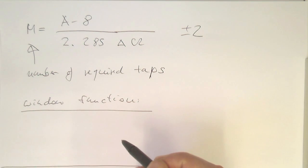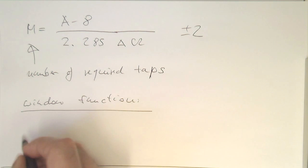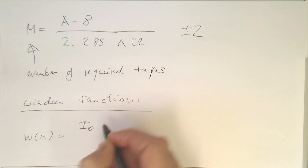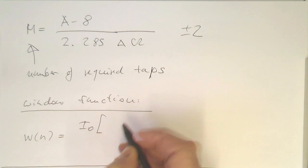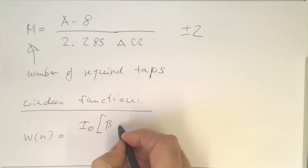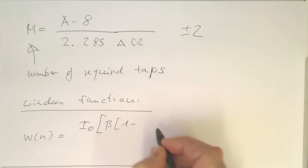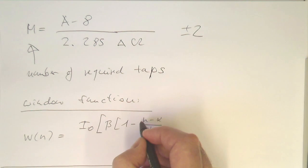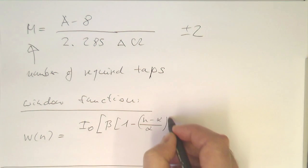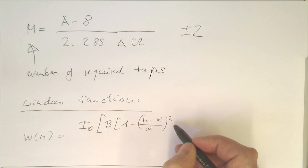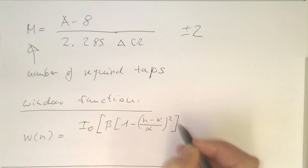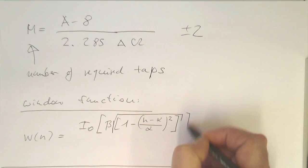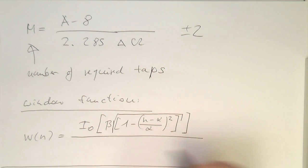Once we have generated that, we can create our window function. The window function is quite a complex beast. It's defined as W of n equals I₀ — a zeroth-order Bessel function — of the argument: one minus ((n minus alpha) divided by alpha) squared, with the square root taken of that expression, which is then fed into the Bessel function.